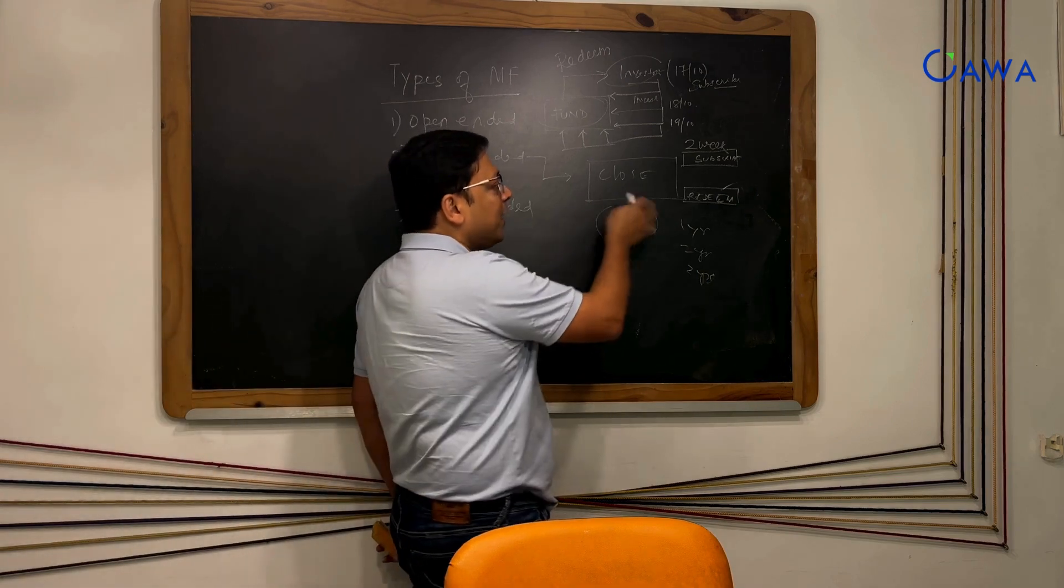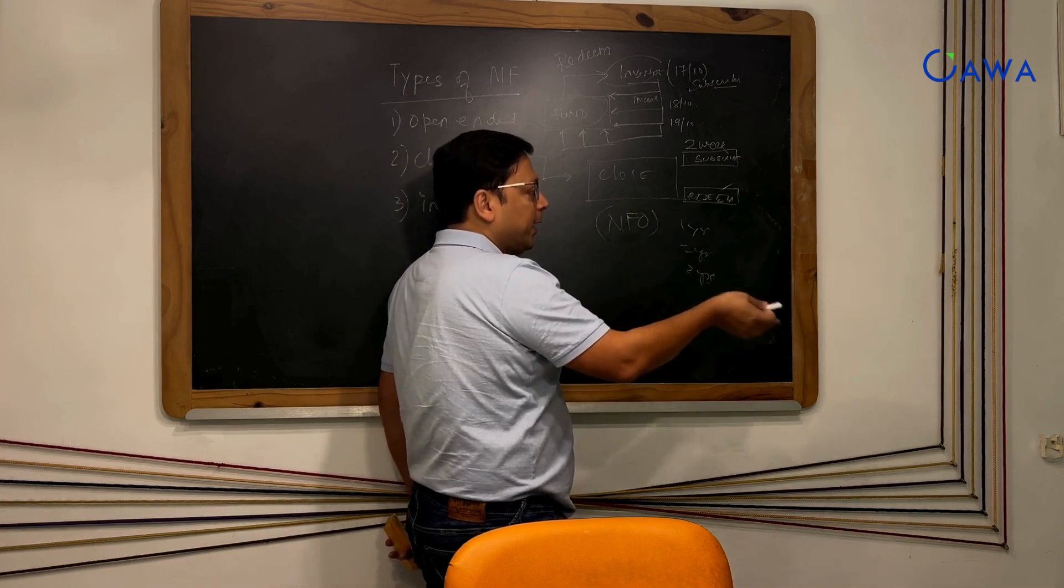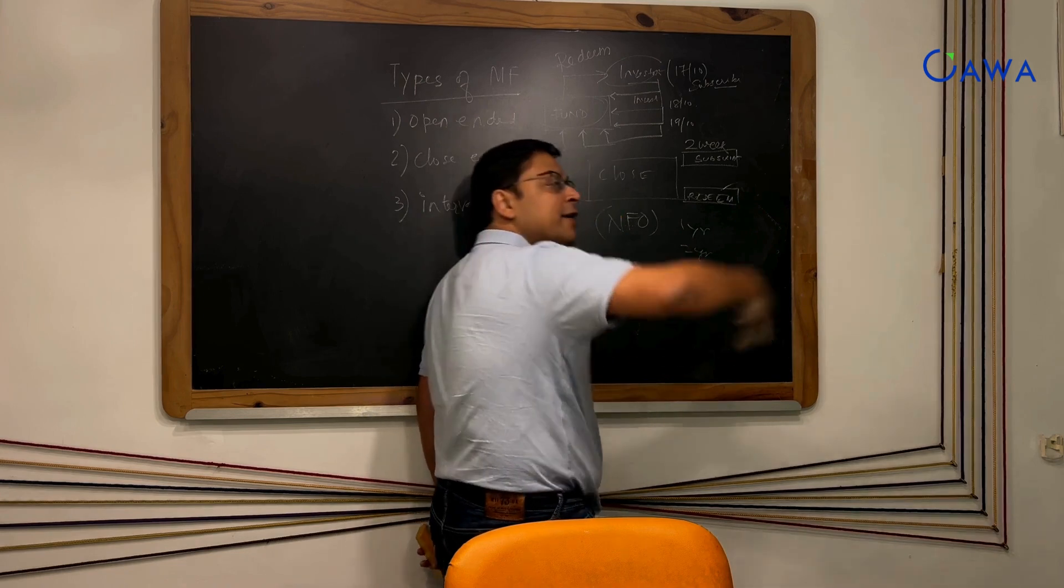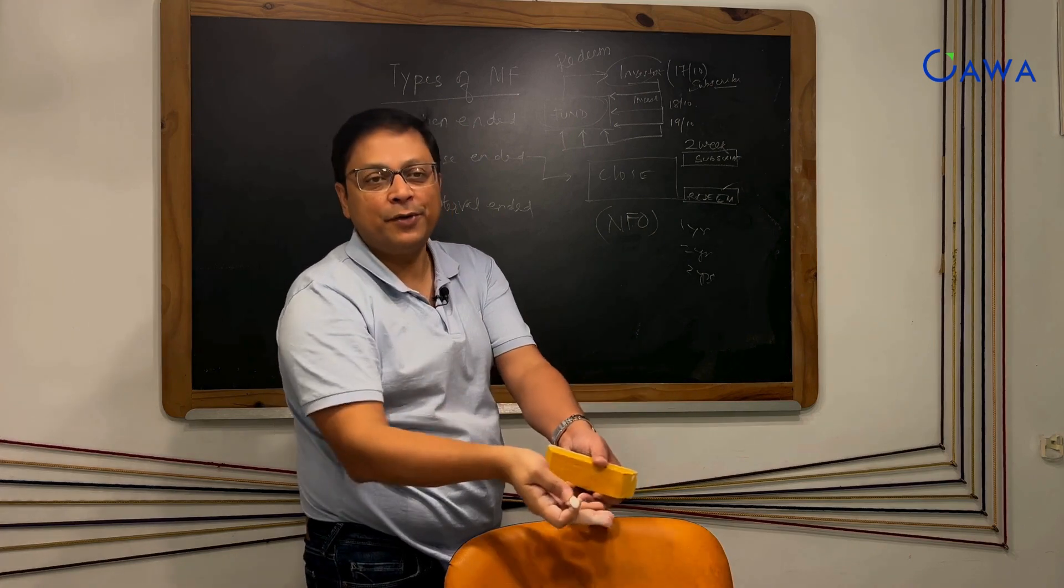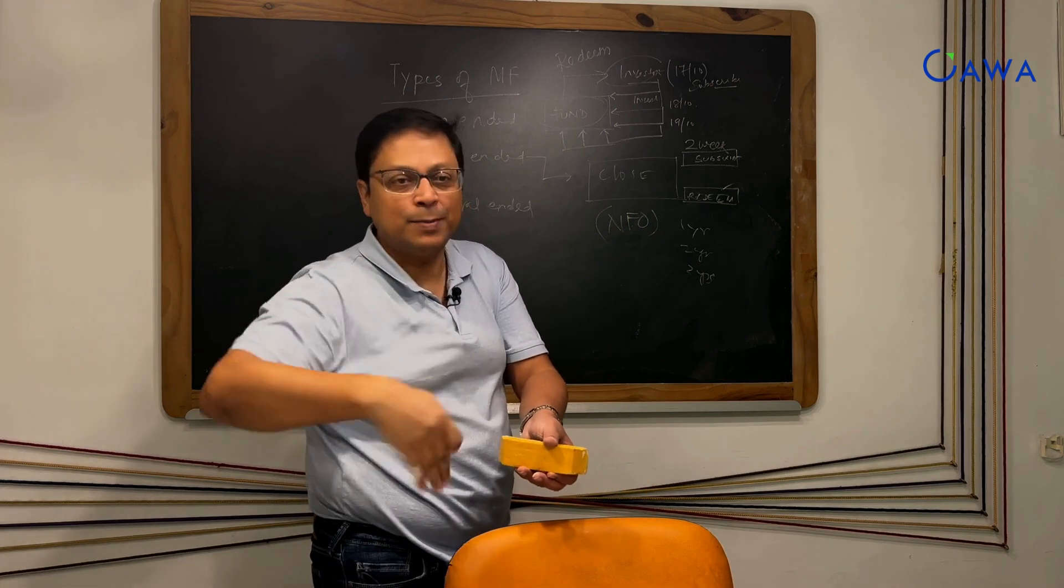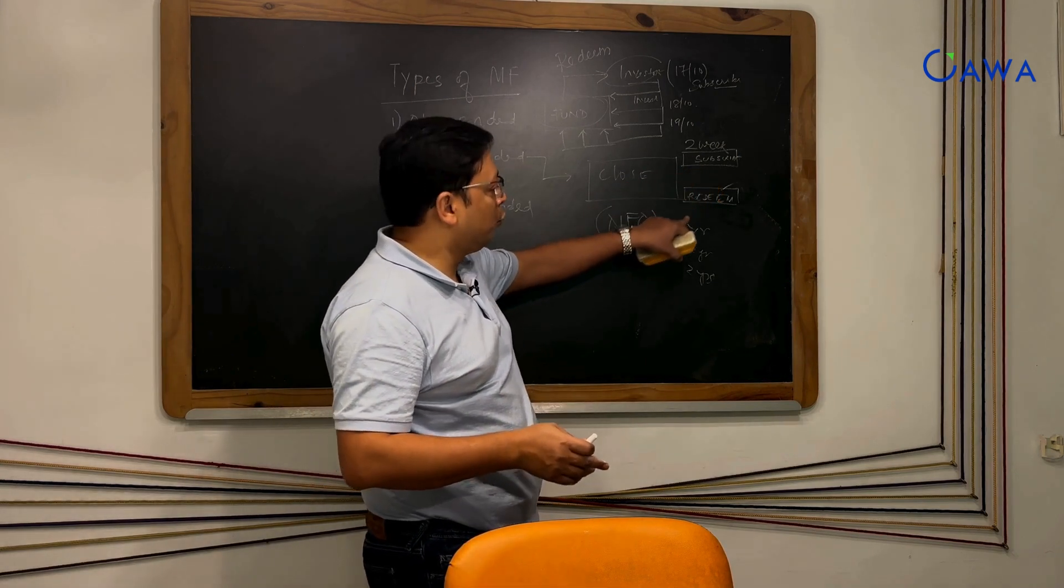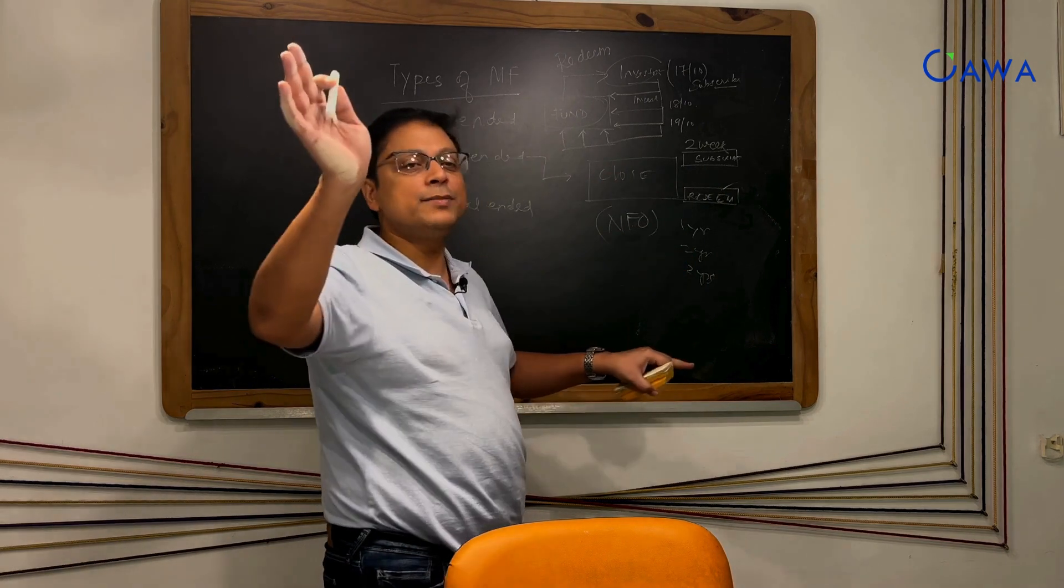Close-ended funds, once the term period ends, that is the time that the mutual fund will actually redeem for everybody. As an investor, it's not that you have to come and redeem. Automatically everybody's money will be redeemed and paid out. You decide when you come in, you know the exact term period. When the term period ends, the mutual fund redeems everybody's units.